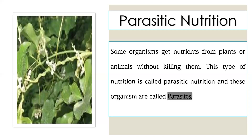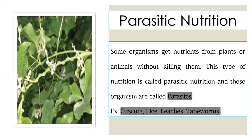In parasitic nutrition, the organism that feeds on both plants and animals doesn't cause any harm, but it gains its nutrients. Examples include cuscuta, lice, leeches, and tapeworms. These are some examples of parasitic nutrition.